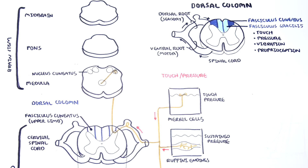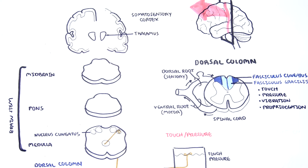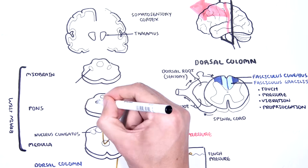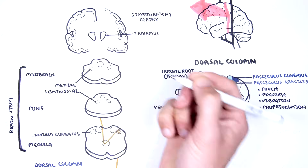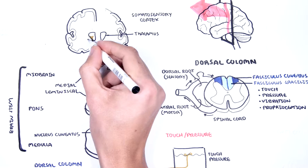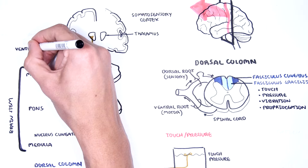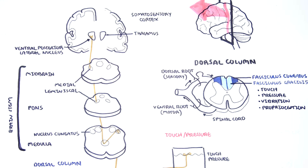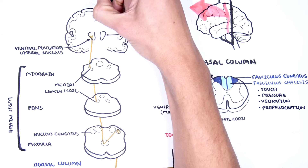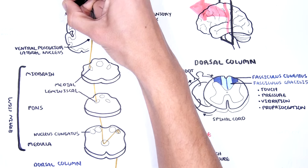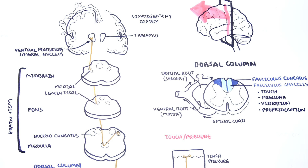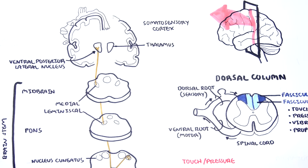The second-order neuron will cross over at the midline of the medulla and travel up the medial lemniscal tract of the brainstem towards the contralateral ventral posterior lateral nucleus of the thalamus. Here, the second-order neuron will synapse with the third-order neuron, which will then carry the sensory information in a highly specific way to the primary somatosensory cortex in the postcentral gyrus of the parietal lobe.